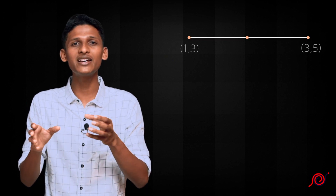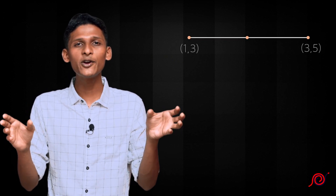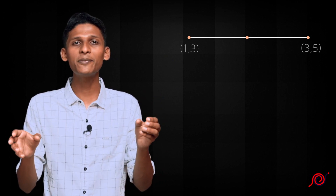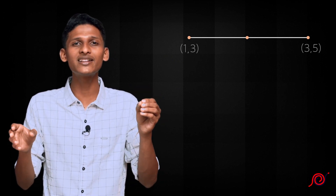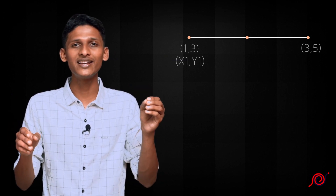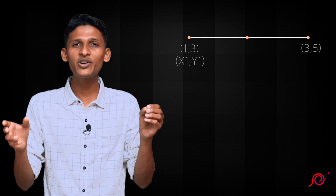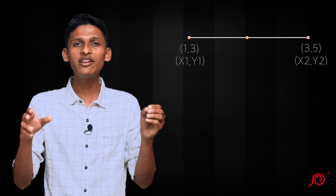Now let us make a few problems. We will take the example of the two points: 1, 3 and 3, 5. These two points form a line. We will find the midpoint. So x1y1 is 1, 3 and x2y2 is 3, 5.